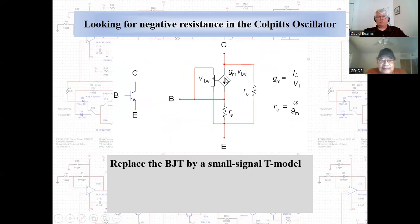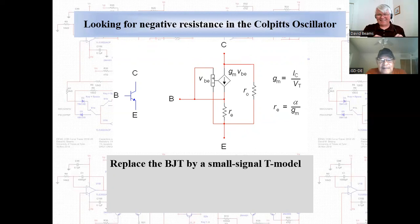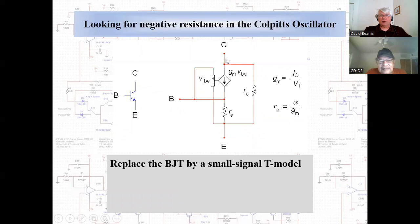I'm going to replace the bipolar transistor with a small signal model — the so-called T-model, because if you rotate it 90 degrees counterclockwise it kind of resembles the shape of the letter T. The transconductance of this transistor is the ratio of the change in collector current to the change in base-emitter voltage that produced it. It's so many milliamps per volt — a change of so many millivolts between the base-emitter produces a change of milliamps in the collector.